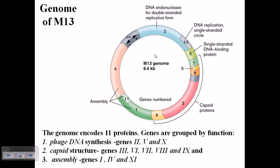The second cluster of genes are the capsid structure proteins, which include genes 3, 6, 7, 8, and 9. This cluster is required for the production of capsids. The third cluster of genes present are the assembly genes, which help to assemble the phage DNA inside the capsid. These are gene numbers 1, 4, and 11.